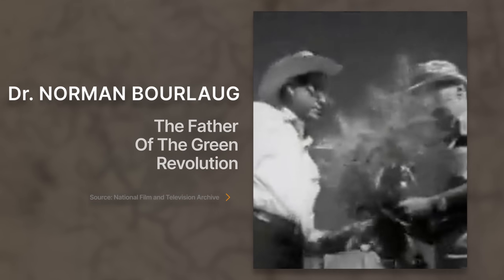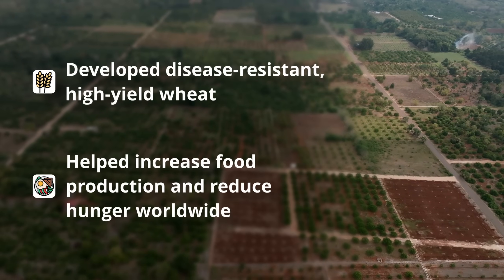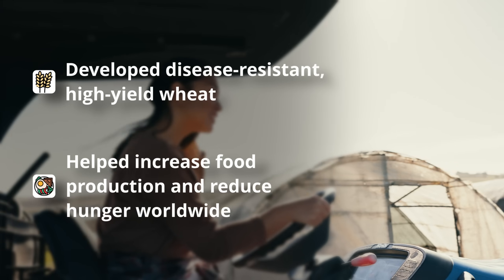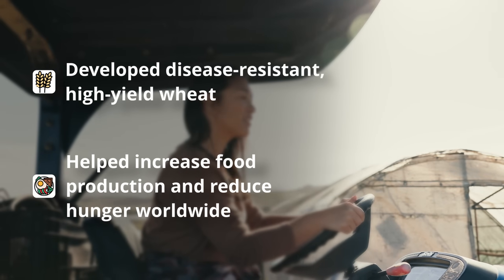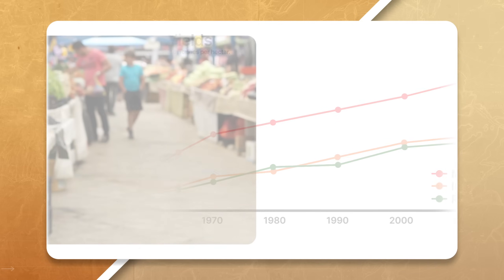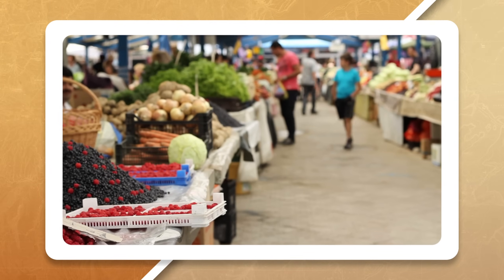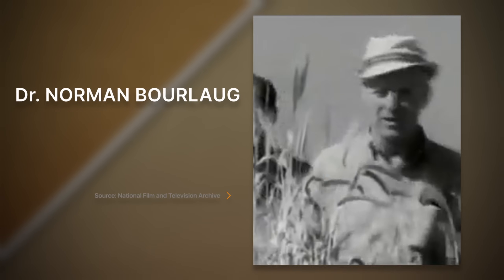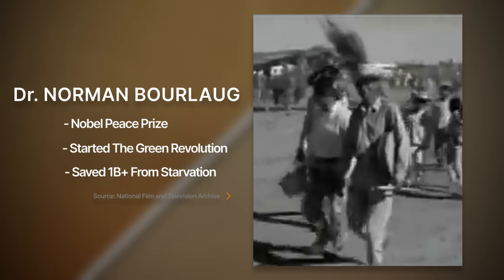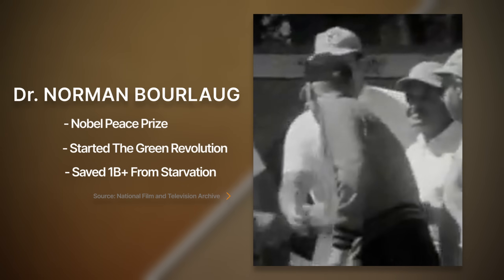Dr. Borlaug is known as the father of the Green Revolution. He ended up developing a new semi-dwarf, high-yield, disease-resistant wheat variety that could prosper in the growing conditions in Mexico. Dr. Borlaug transformed not just Mexico's agricultural production, but Pakistan's and India's as well. His work allowed for increased food supplies for countries around the world, resulting in millions of lives being saved from starvation. Dr. Borlaug ended up winning a Nobel Peace Prize and is credited for saving over a billion lives from starvation.